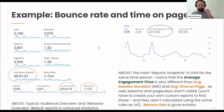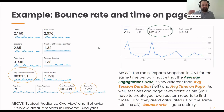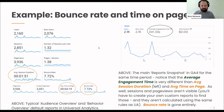If you're reporting on time on page now and suddenly on July 1 you start reporting on average engagement time, people who read your reports — particularly board, C-suite — are going to ask, 'What happened? What is going on?' The reality is it's just a different way of measuring these things. Average time on page only captures data when someone looks at a second page on your site. If they only look at one page, nothing is captured.